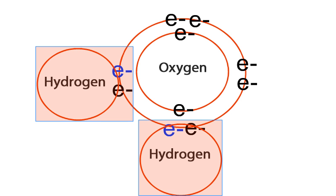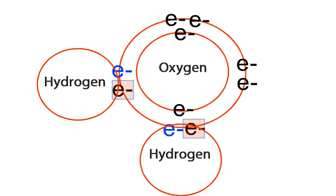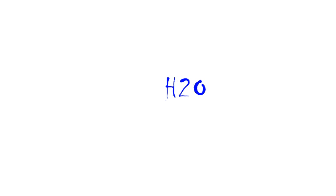The hydrogen atoms, in return, will share 1 of the oxygen electrons to become stable. This sharing of electrons between 2 hydrogen atoms and 1 oxygen atom forms a water molecule as indicated by the formula H2O.